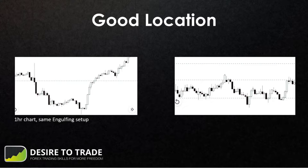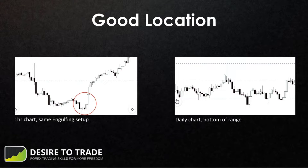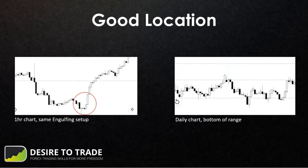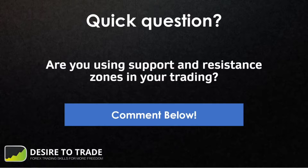Here's an example of a good location. You've got the same kind of engulfing candle on a one-hour chart, but on the daily chart price is at the bottom of the range and approaching a support area. That makes it much more likely for the market to bounce back and give us a nice move. It's not just about the setup — it's about the location and making sure these things align for better trades.